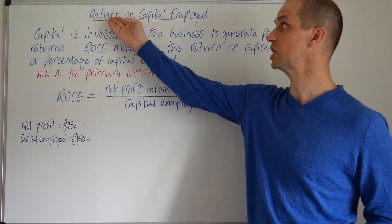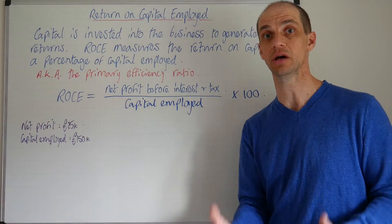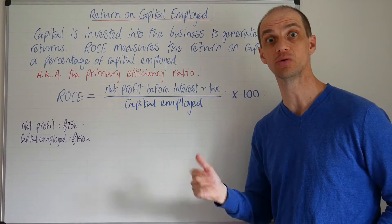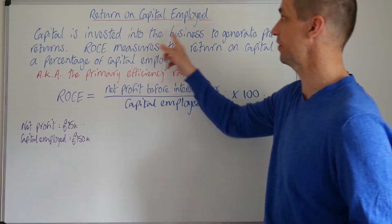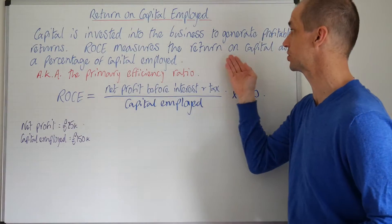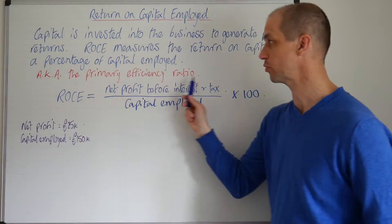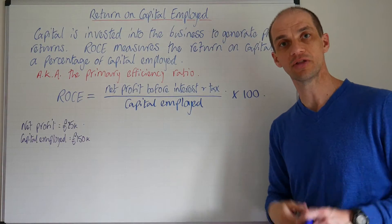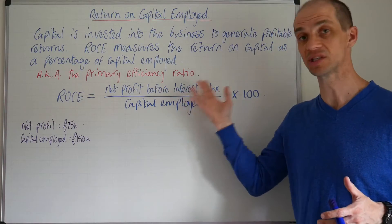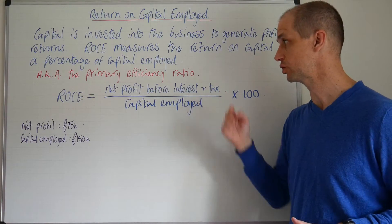It tells us what sort of return is generated on the capital employed in the business. Any investor will expect to generate returns on the capital they invest into the business. Capital is invested into the business to generate profitable returns. ROCE measures the return on capital as a percentage of capital employed. It's also known as the primary efficiency ratio, because it's so effective in helping us understand the efficiency with which capital is managed to generate that net profit before interest and tax.